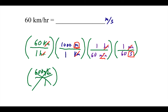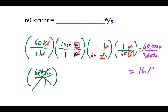Everything else is canceled. Multiplying across the top: 60 times 1,000 meters times 1 times 1 gives me 60,000 meters. On the bottom: 1 times 1 times 60 times 60 seconds gives me 3,600 seconds — and by the way, there are 3,600 seconds in an hour, which is a shortcut you may want to use later. Dividing 60,000 meters by 3,600 seconds gives me 16.7 meters per second. That is what 60 kilometers per hour is in standard units.